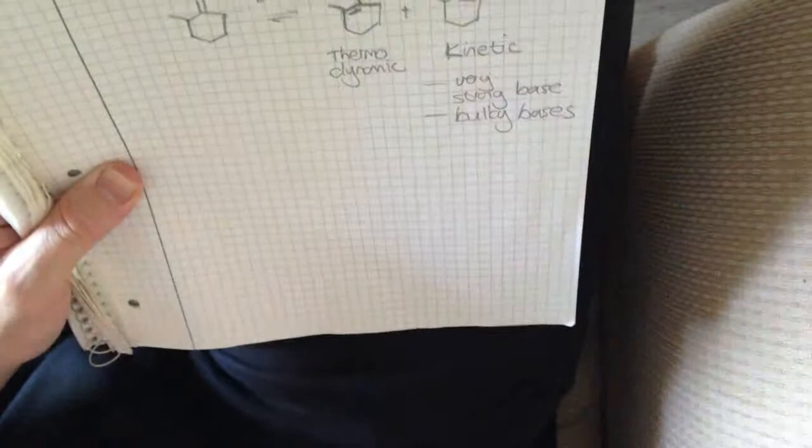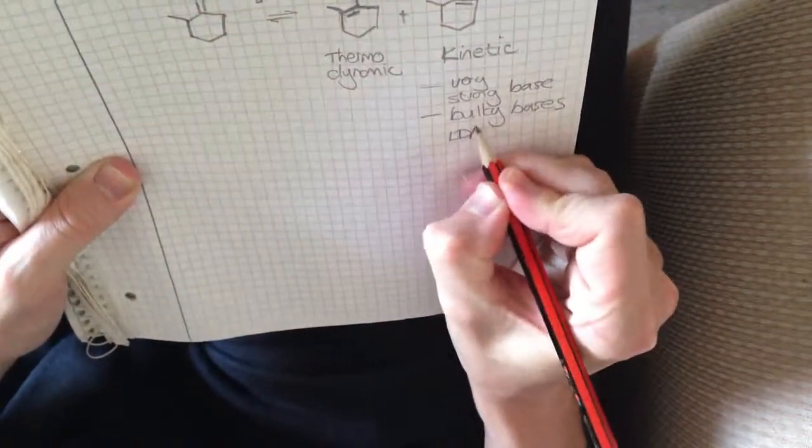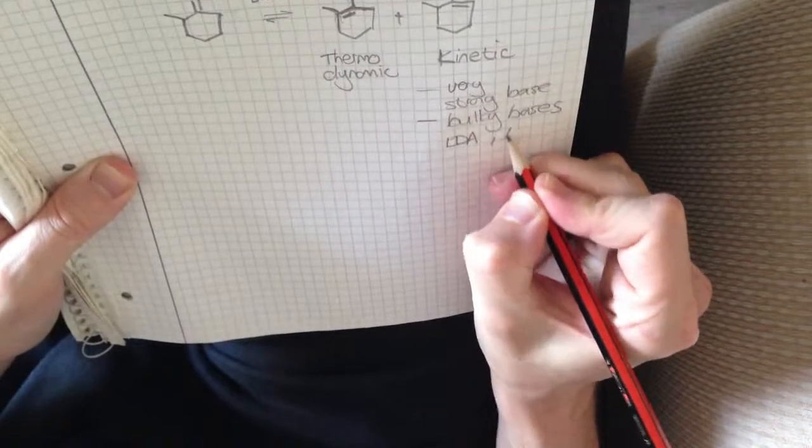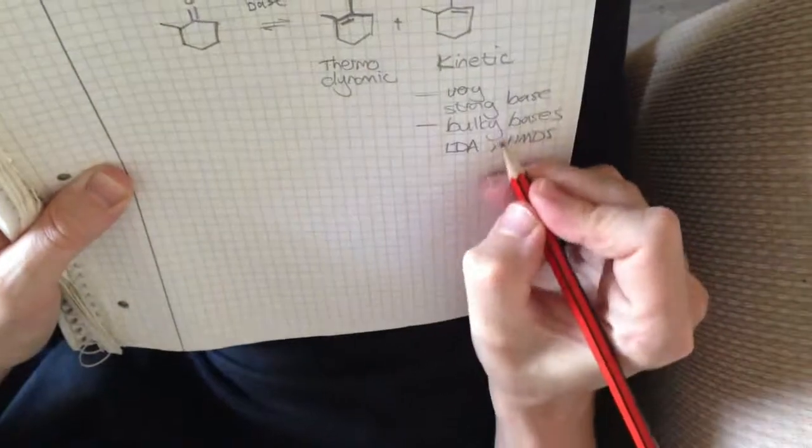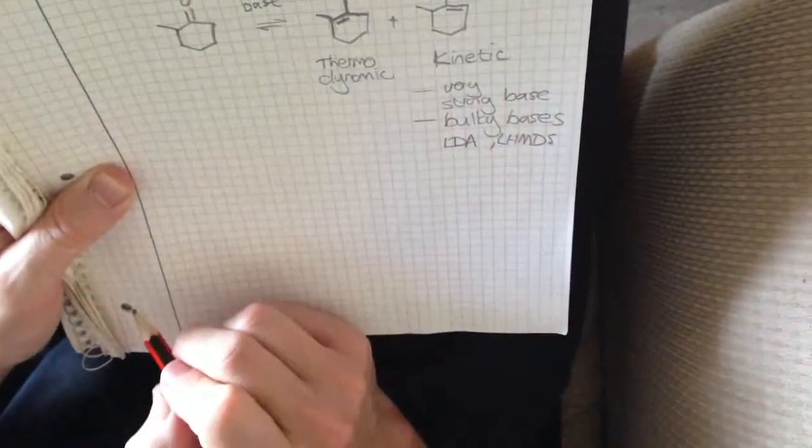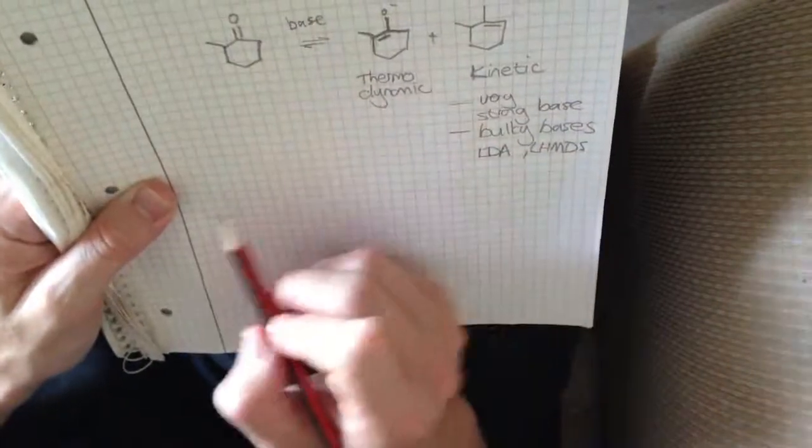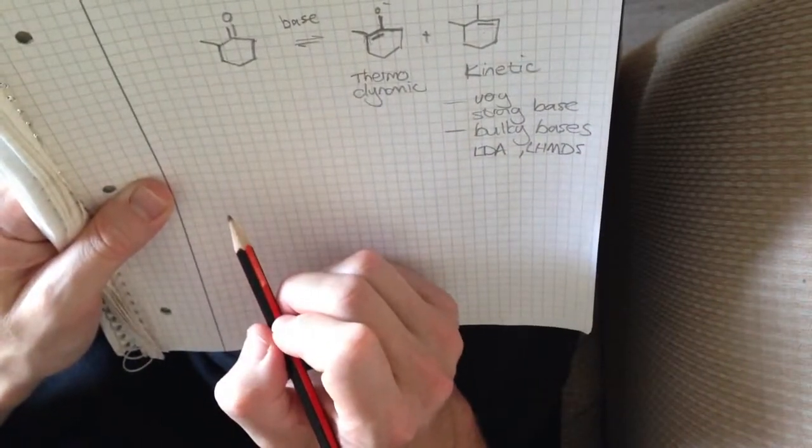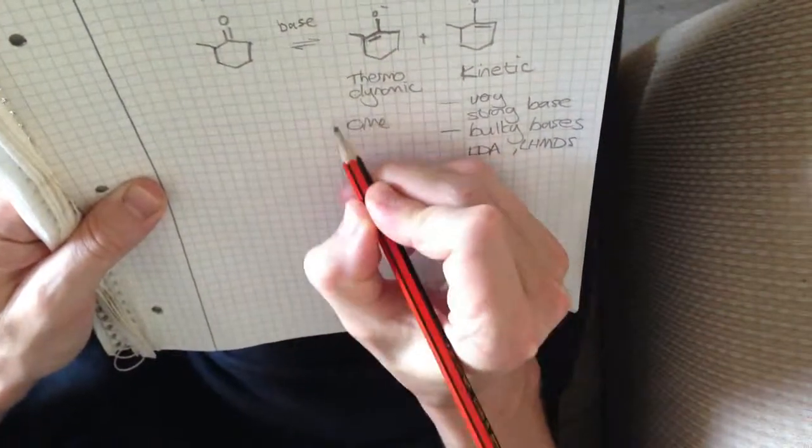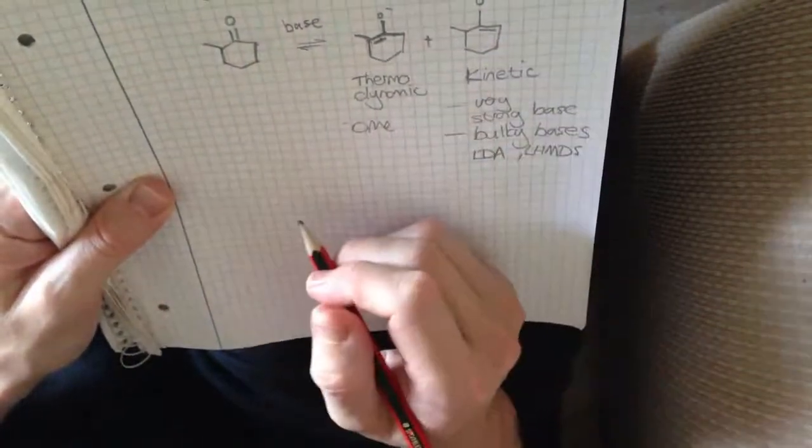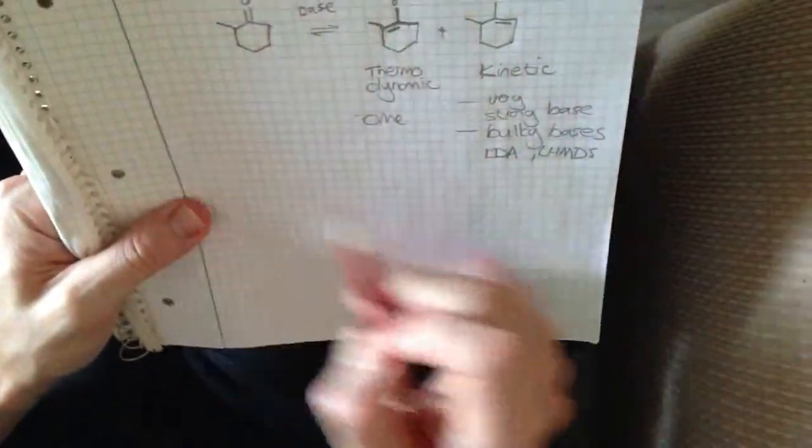And, of course, you know exactly which one we're talking about. The most common one is LDA. Of course, HMDS is another option. Lithium hexamethyldisilazide is another very good option for that. The thermodynamic enolates tend to be the weaker bases, like methoxide. Methoxide might be an option, and some other ones. So that's pretty much what we need to be thinking.